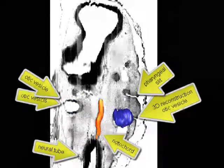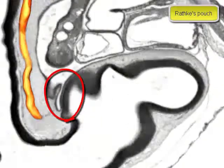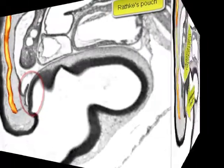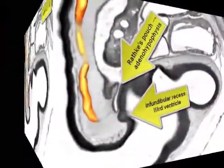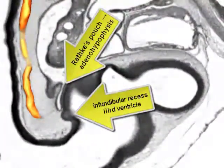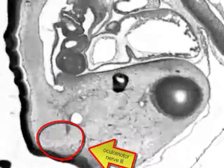The otic vesicle is getting very close to the first pharyngeal slit. This slit will later form the external acoustic meatus. A conspicuous structure is Rathke's pouch. The pituitary gland forms out of this pouch and the infundibular recess of the third ventricle. Finally, note that in this very early embryo, already cranial nerves are developing.